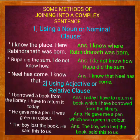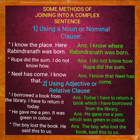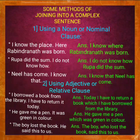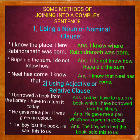Next example — 'He gave me a pen' and 'It was green in color.' If I join them into a complex sentence using a relative or adjective clause, the answer will be: 'He gave me a pen which was green in color.' Here, 'he gave me a pen' is the independent clause and 'which was green in color' is the relative clause. The relative pronoun is 'which' and the antecedent is 'pen.'